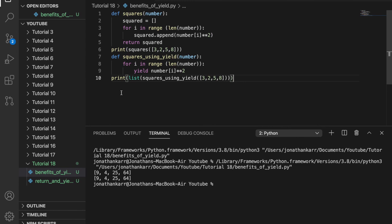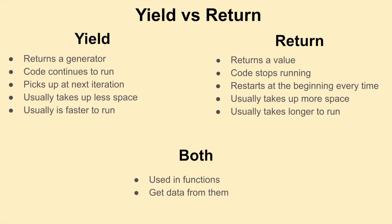Now let's recap the differences between return and yield. The yield statement returns a generator versus the return statement which returns a value. After yield the code continues to run, whereas with return the code stops running. Each time you use yield it picks up at the next iteration, whereas return restarts at the beginning every time. Yield takes up less space and is quicker to run, versus the return statement which takes up more space and is longer to run. Both yield and return are used in functions and you can get data from both of them.